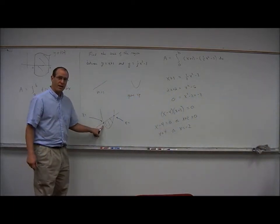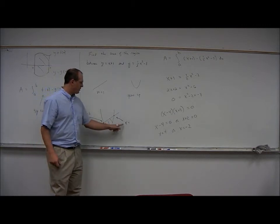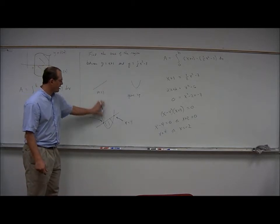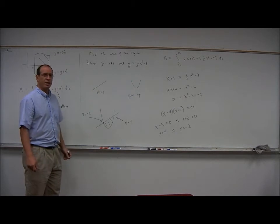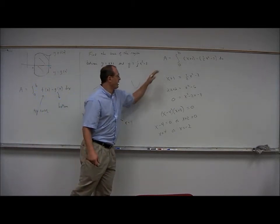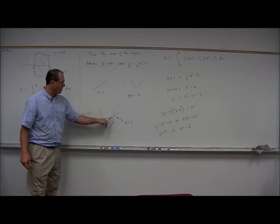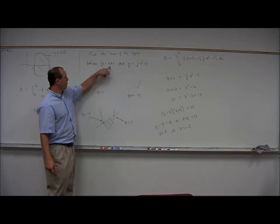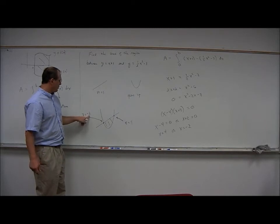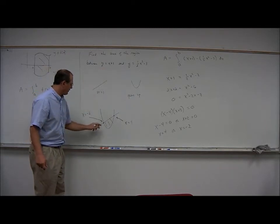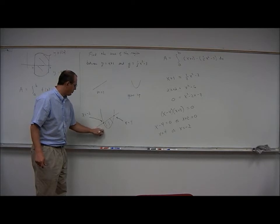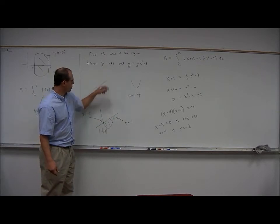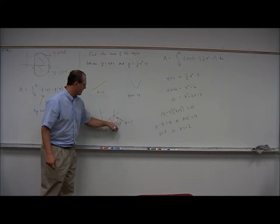This left x value is x equals negative 2 and this right x value is x equals 4. The vertical orientation of the region is not important in terms of finding its area, but you could figure out the y coordinates by plugging the corresponding x's into either equation. If x is equal to negative 2, y is equal to negative 1. So this point is negative 2 comma negative 1 in the third quadrant. And at x equals 4, y is 5, that's the point 4 comma 5 in the first quadrant.